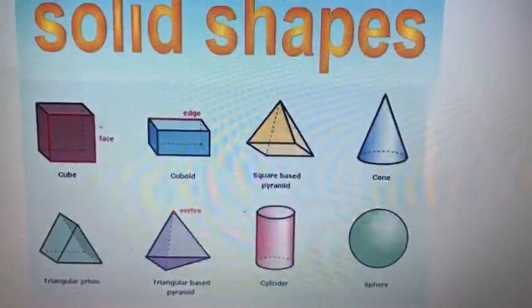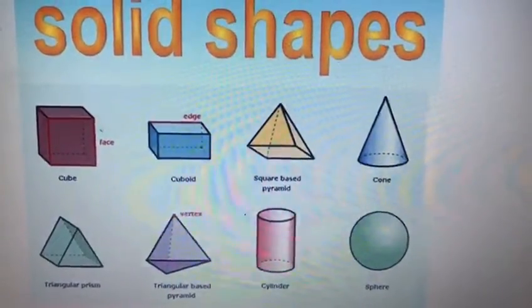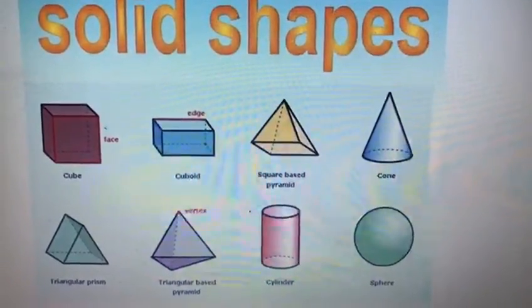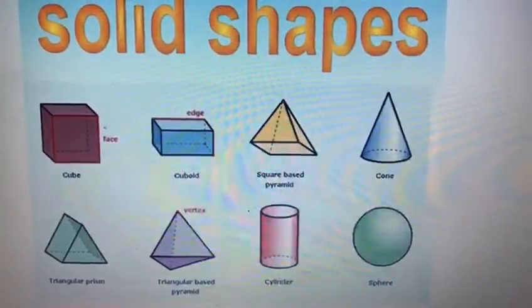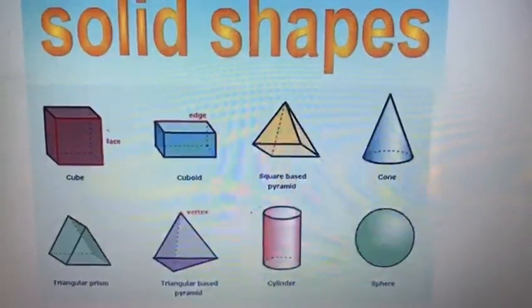Now the third is square pyramid. The fourth is cone. Cone looks like a triangle.